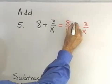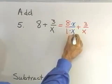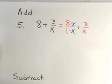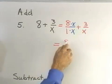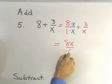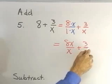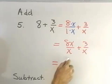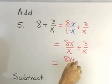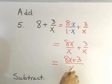So, I need to multiply the numerator and denominator of this fraction by x. When I do that, I end up with 8x over x plus 3 over x, and that will be 8x plus 3 all divided by x.